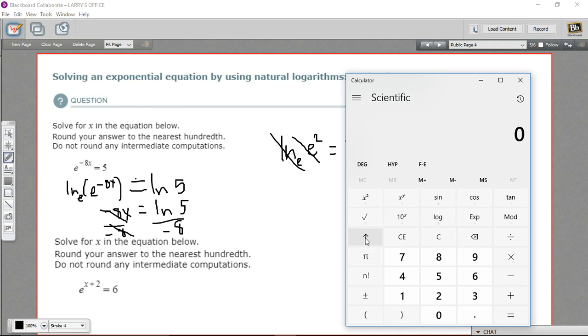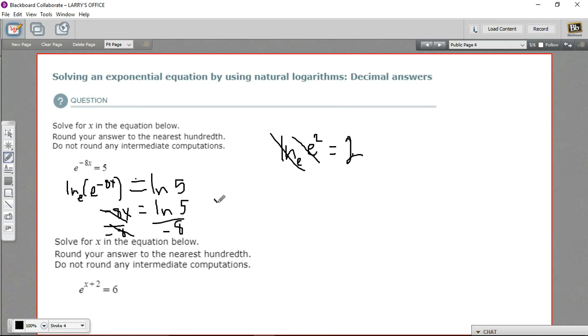I'm going to need to press this up arrow on the Windows calculator to get my natural log button. So I'm going to punch in a 5 and hit the natural log button. So that value, natural log of 5. Then we're going to divide this by a negative 8. And let's see, they want us to round this to the nearest hundredth. So that's going to be a negative 0.20.